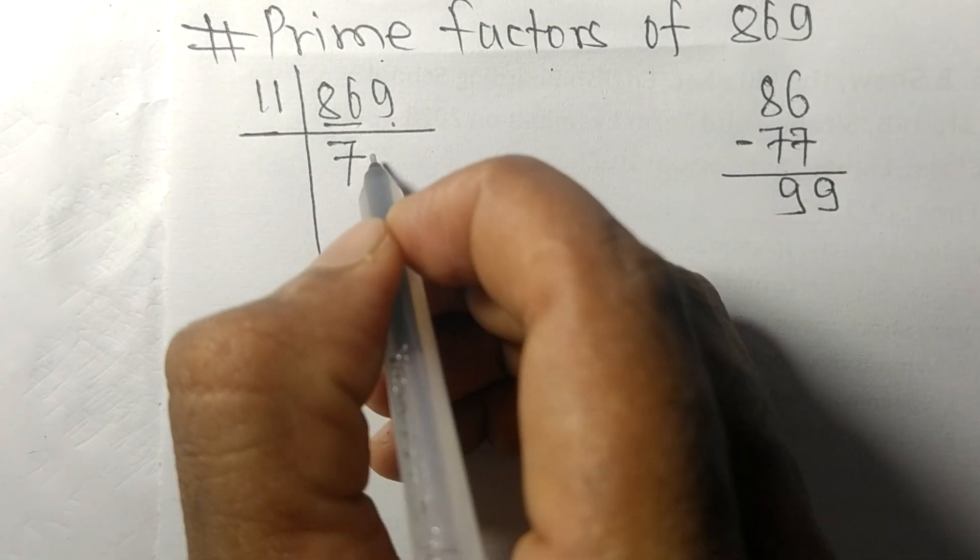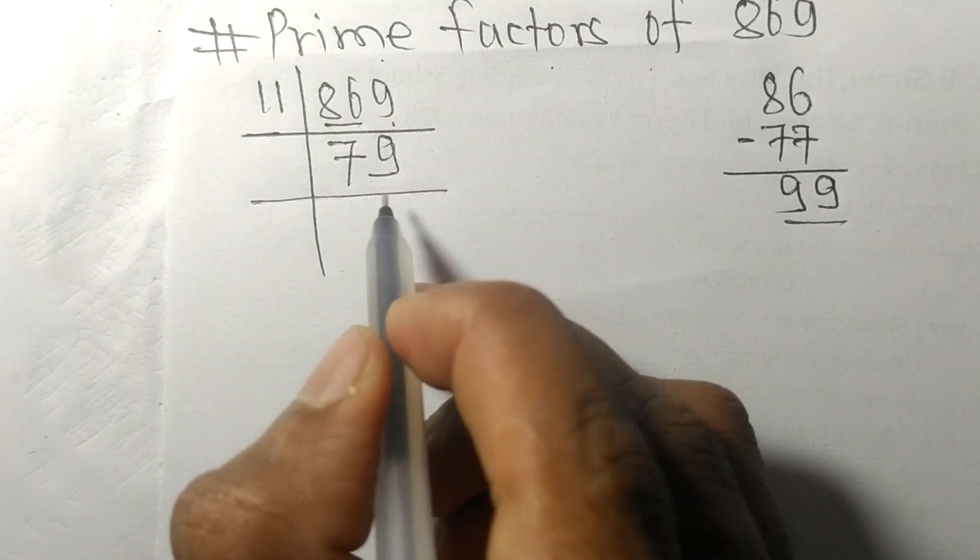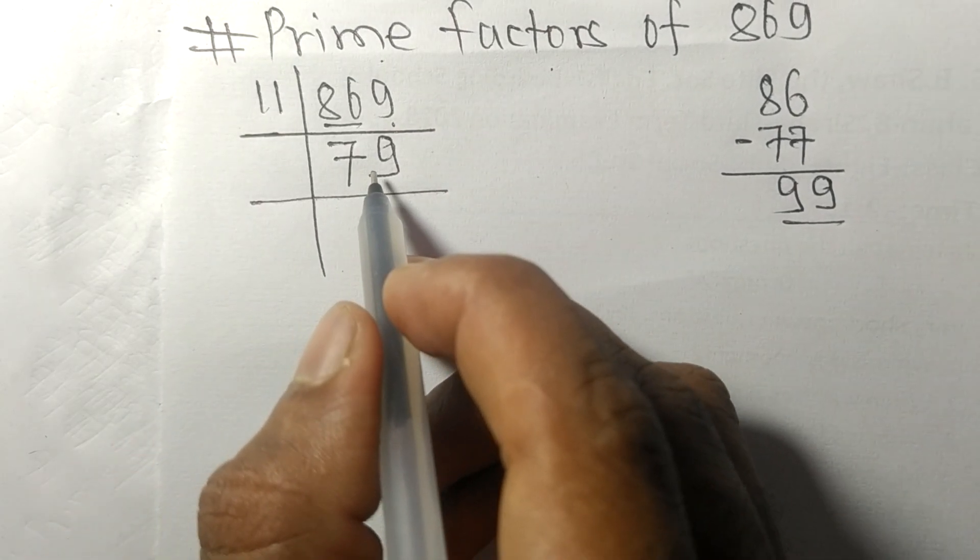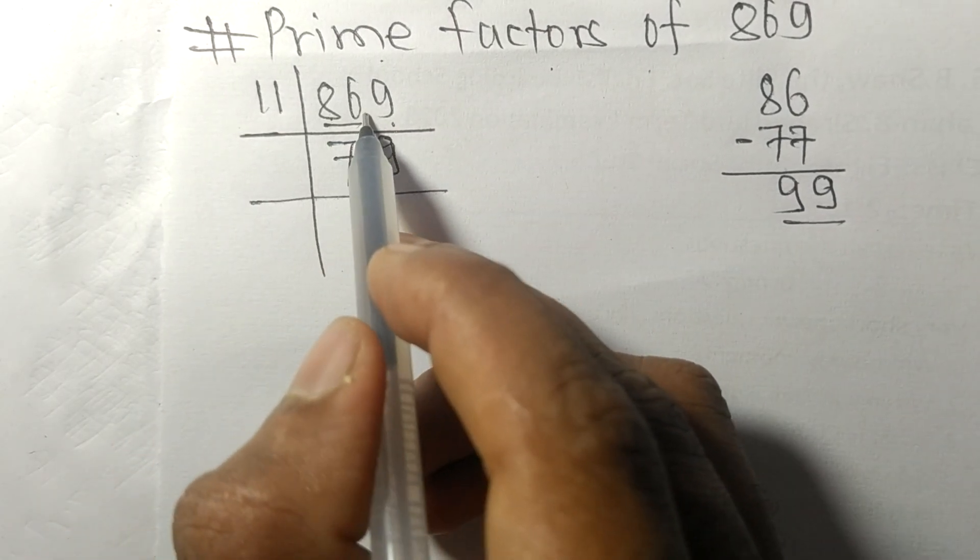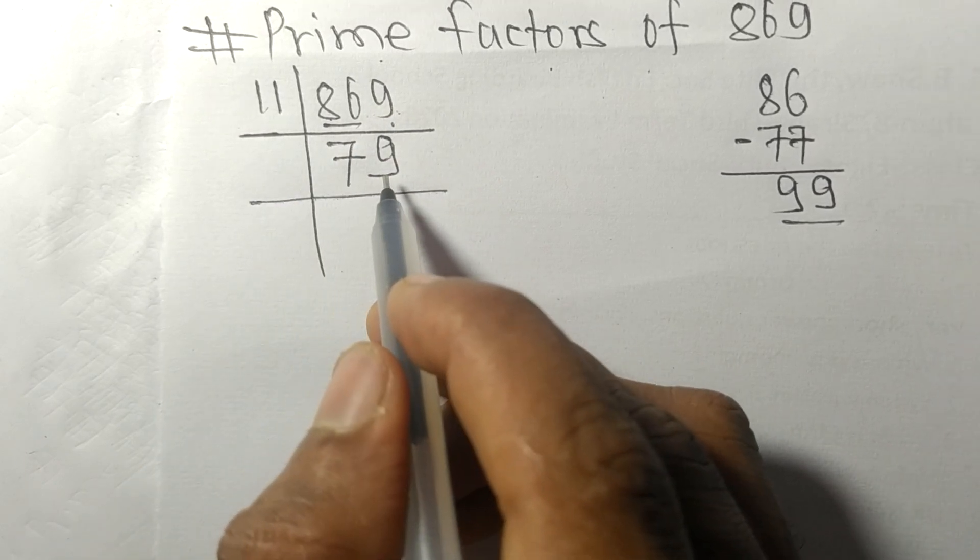becomes 99. 11 times 9 means 99. So now we got 79 on dividing 869 by 11. 79 is a